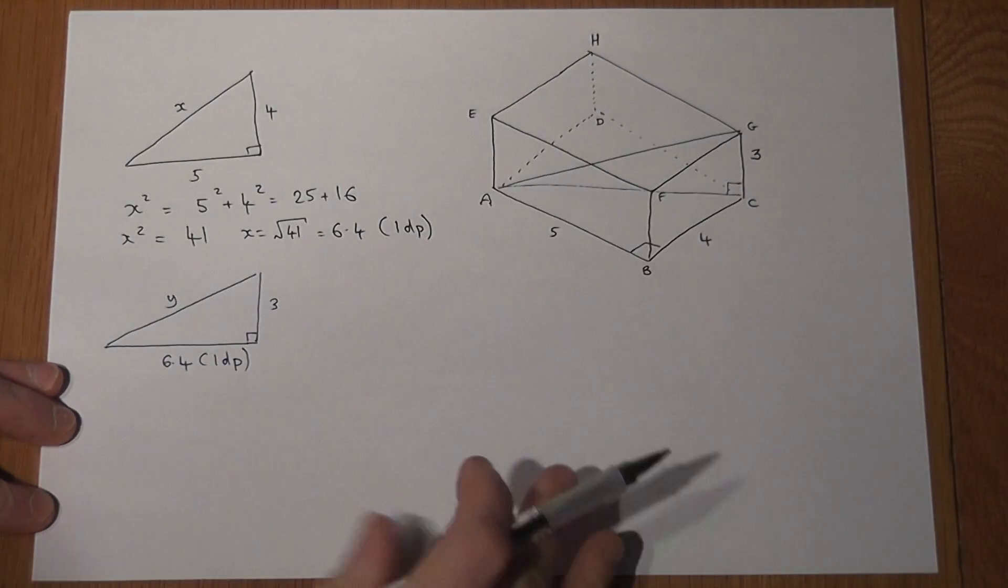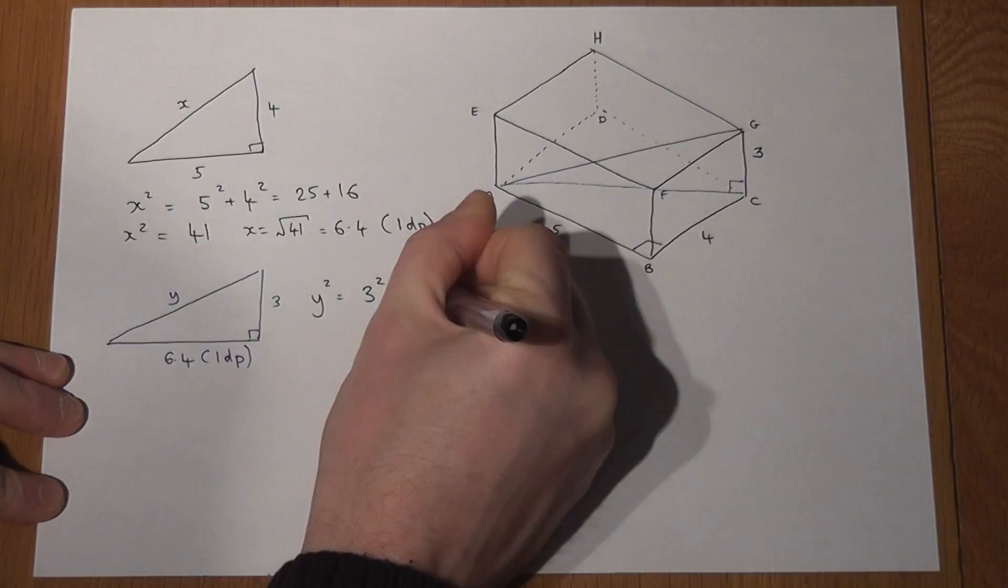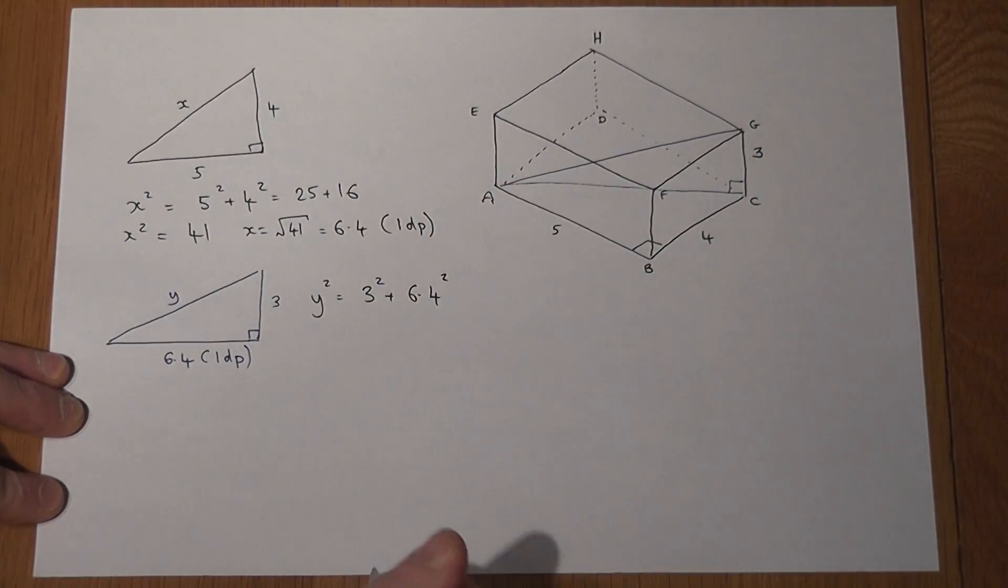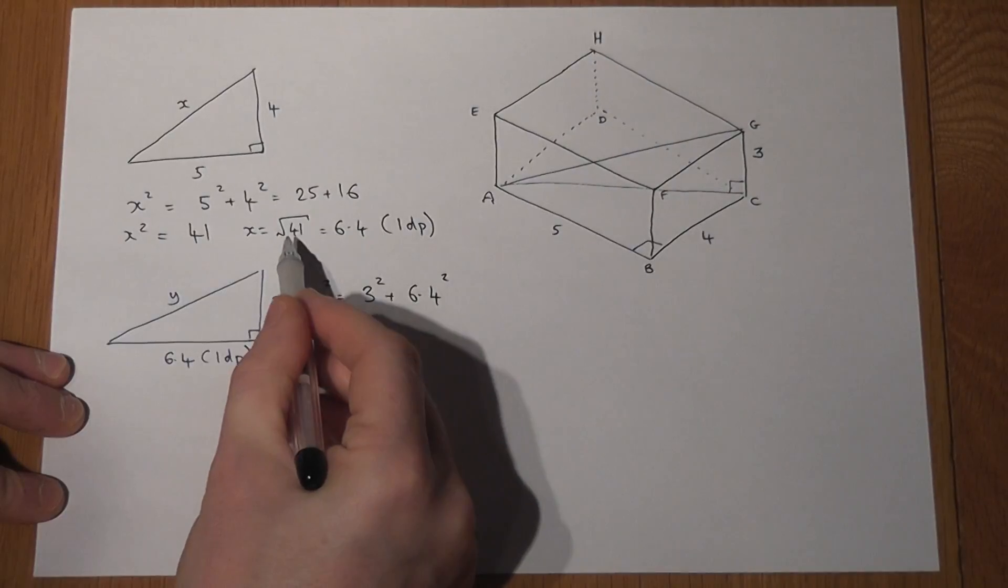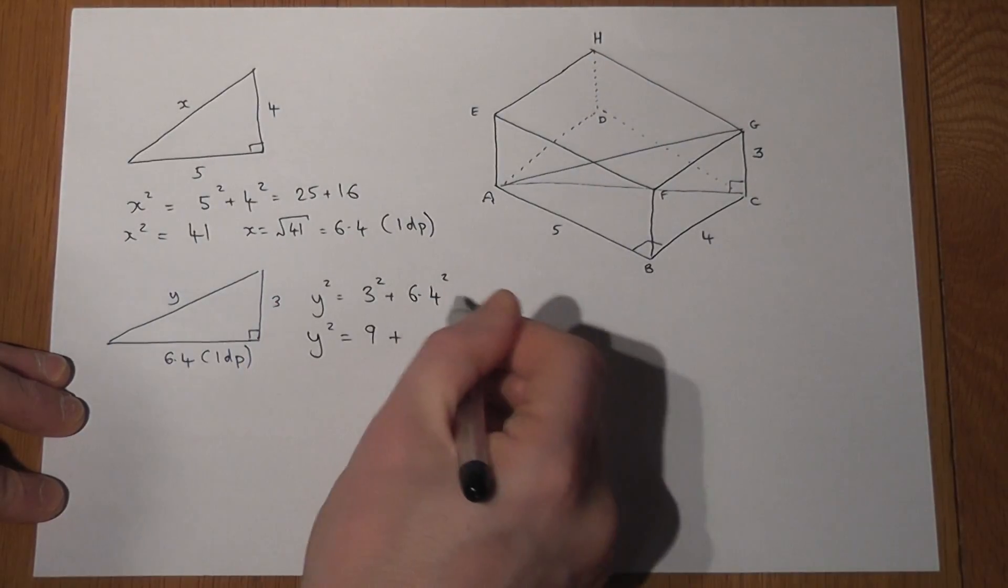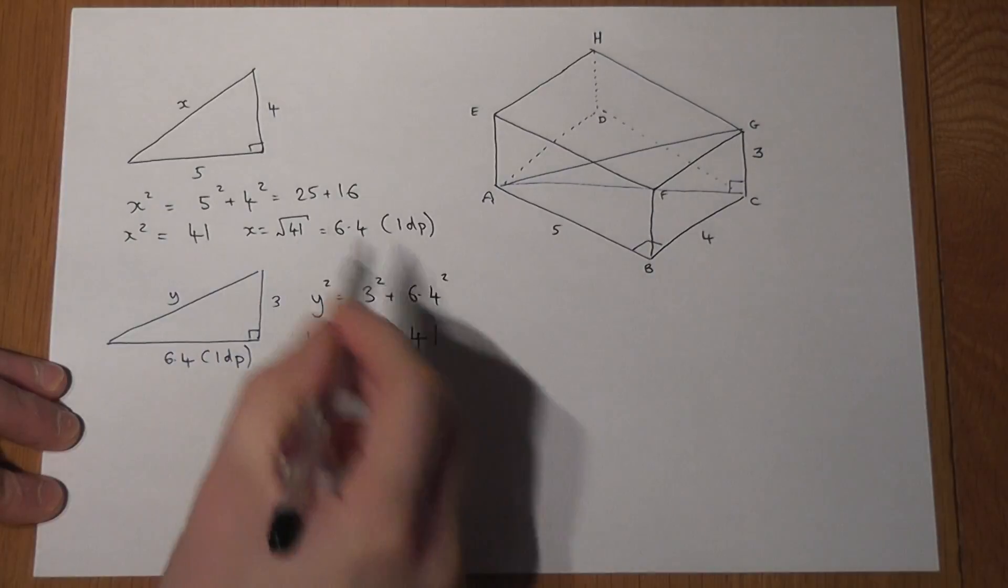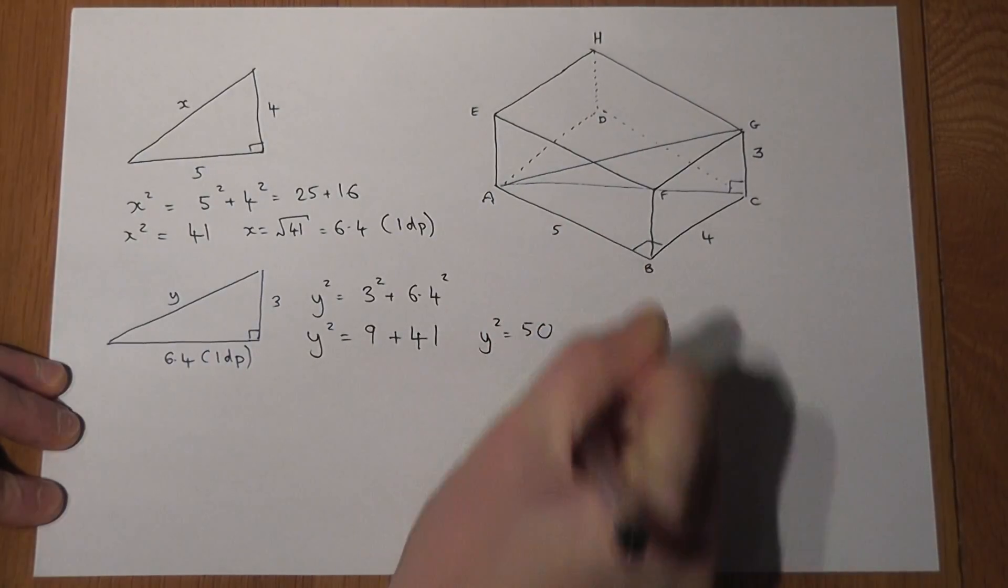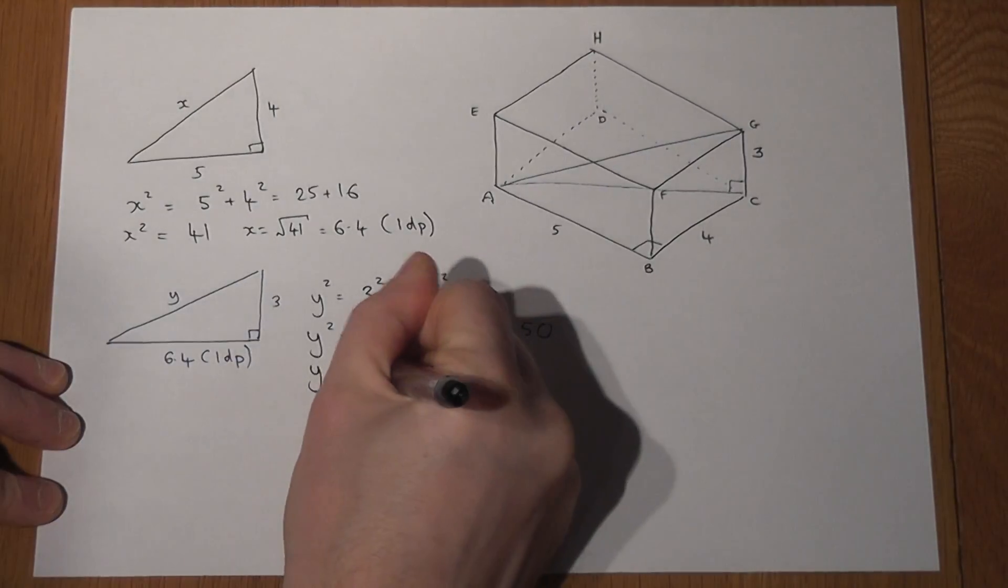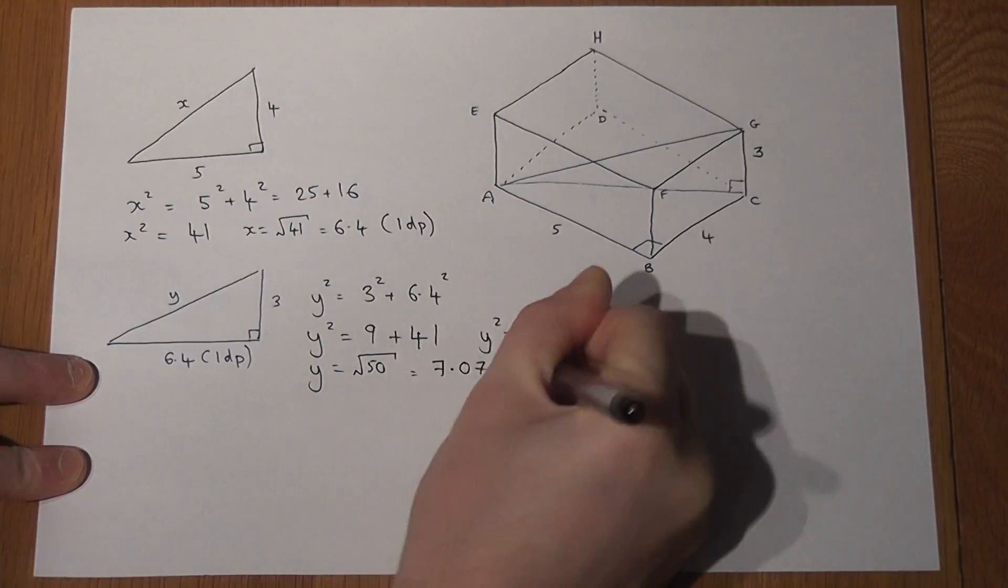So to find Y, we then just use Pythagoras again. I know that Y squared equals 3 squared plus 6.4, that's to 1dp squared. So Y squared equals 9 plus, now 6.4 squared. So when I square the accurate decimal, I get back to 41. So be careful there to be as accurate as you possibly can. This 6.4 squared gets back to 41, so Y squared equals 50. Therefore the length of Y must be the square root of 50, which if we work that out, is 7.07 to 2dp.